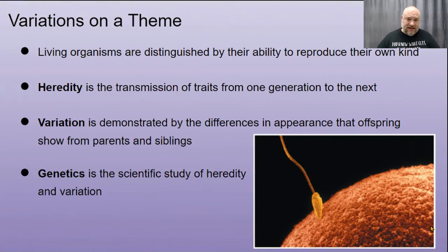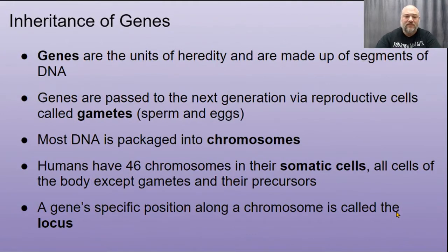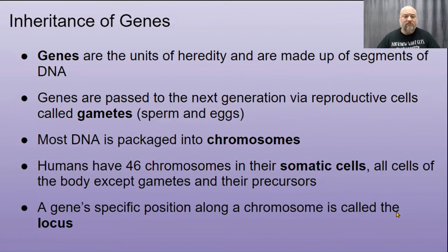Putting it all together, we get genetics — that's what we're studying in this unit on variation and genetics. Genes are the units of heredity and are made up of segments of DNA. Genes are passed on to the next generation via reproductive cells called gametes — in humans we call these egg and sperm.